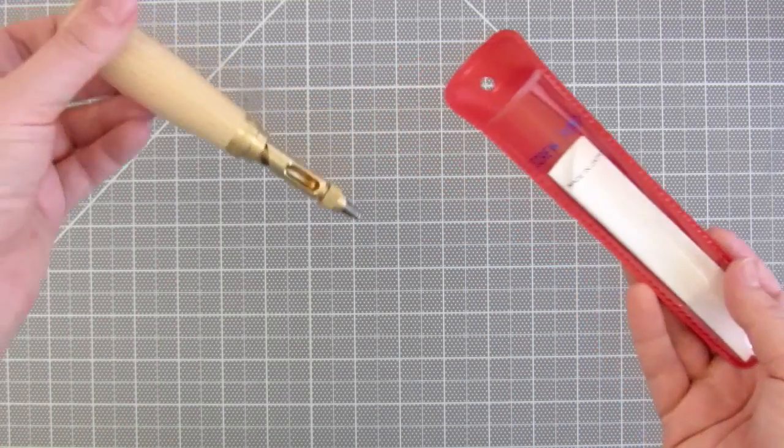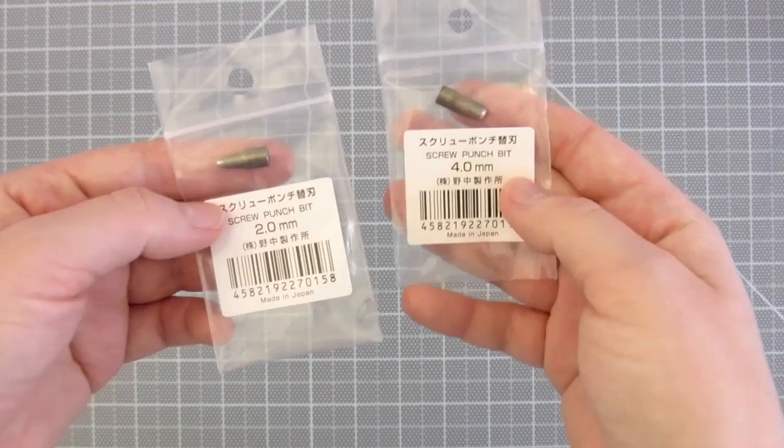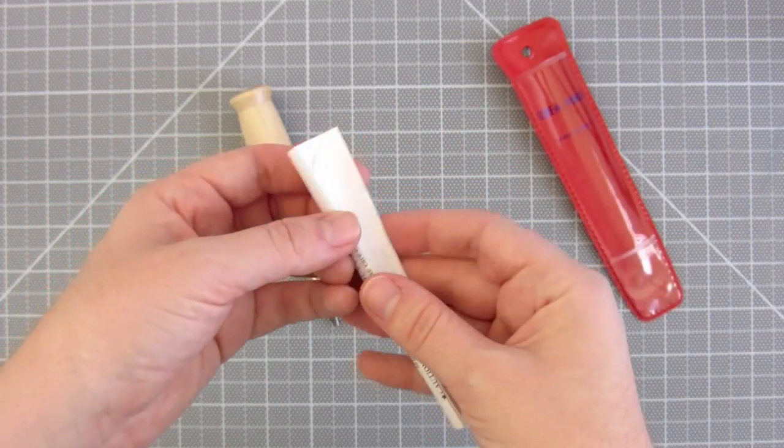The one I chose to buy is an Eito screw punch, and it might be pronounced differently, I'm not sure. It comes with a 3mm bit, and I bought the 2 and the 4 on the side. I'll include the link to where I bought it in the description below.